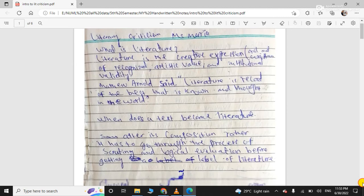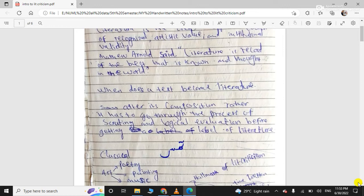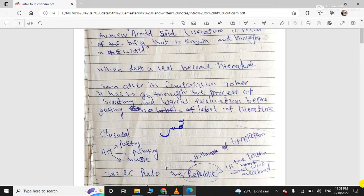After writing something, it has to go through a process to become literature. There will be scrutiny and logical evaluation before it becomes literature. In the classical age, art was divided into three parts: poetry, painting, and music.